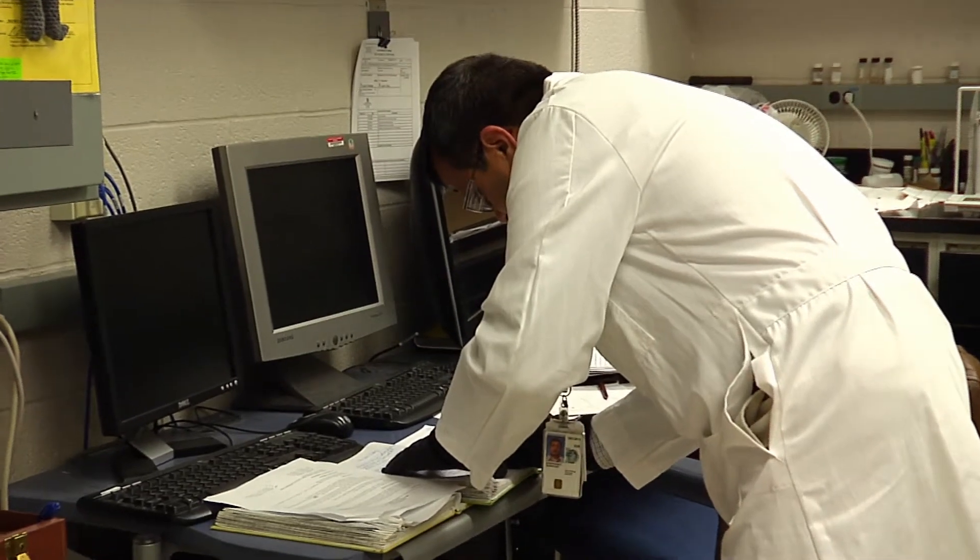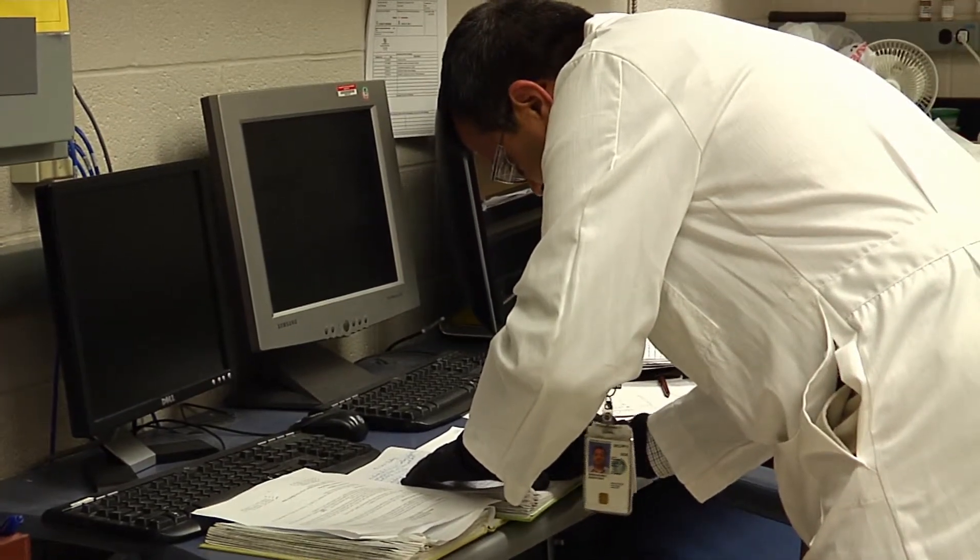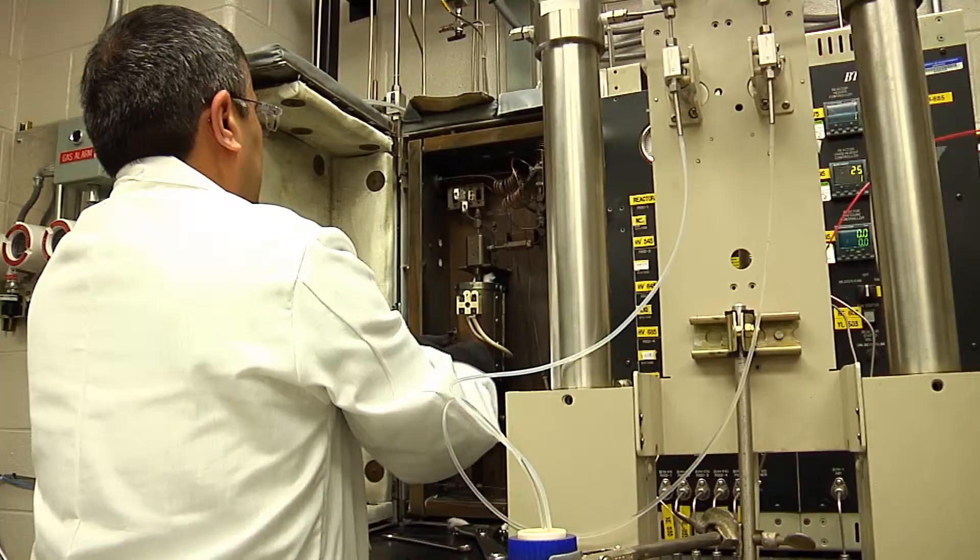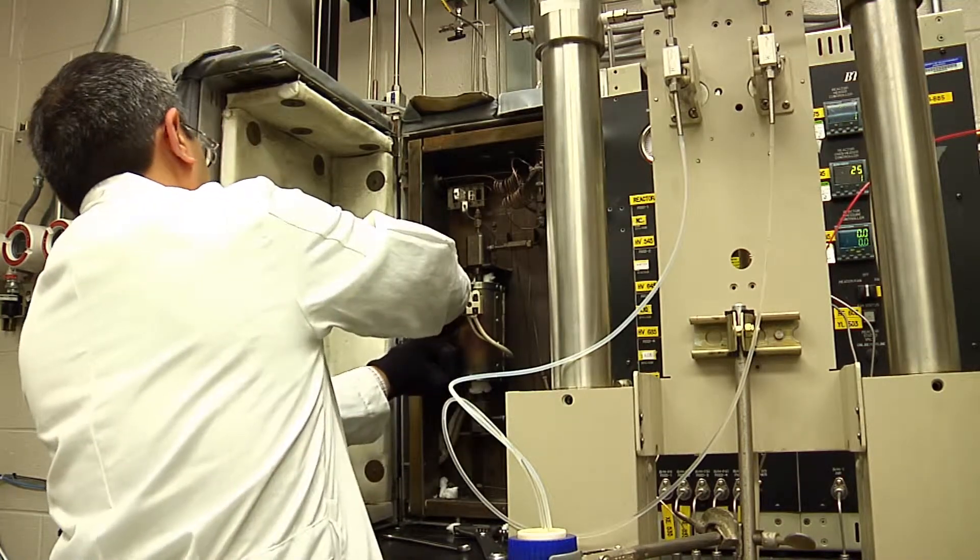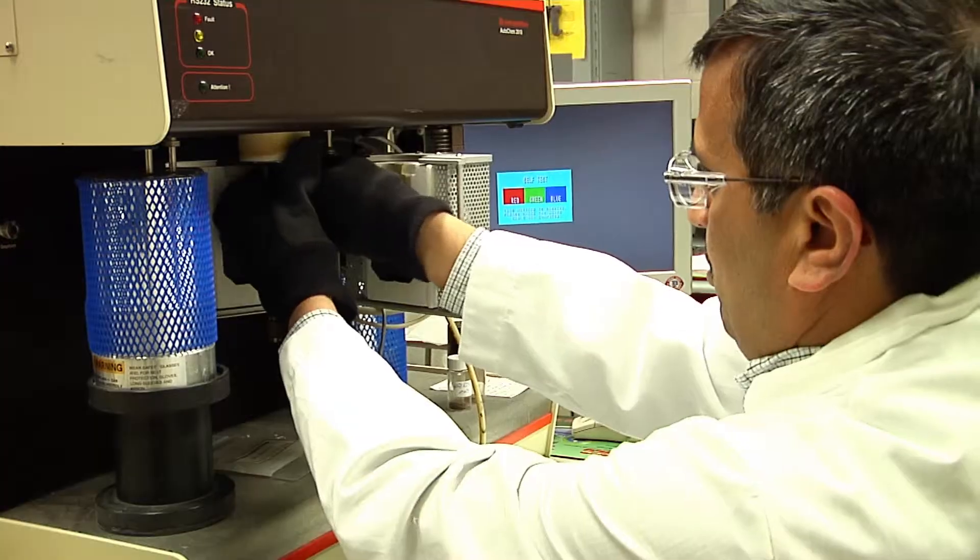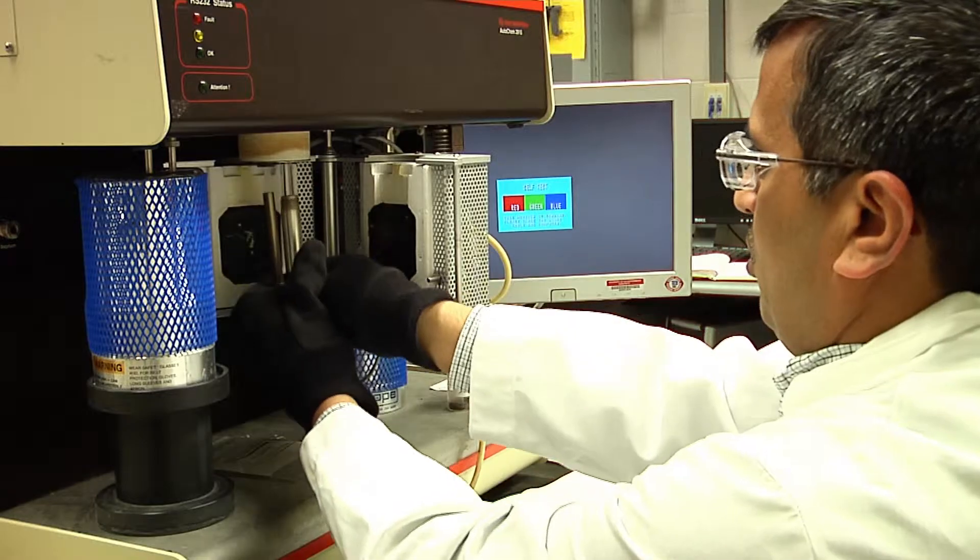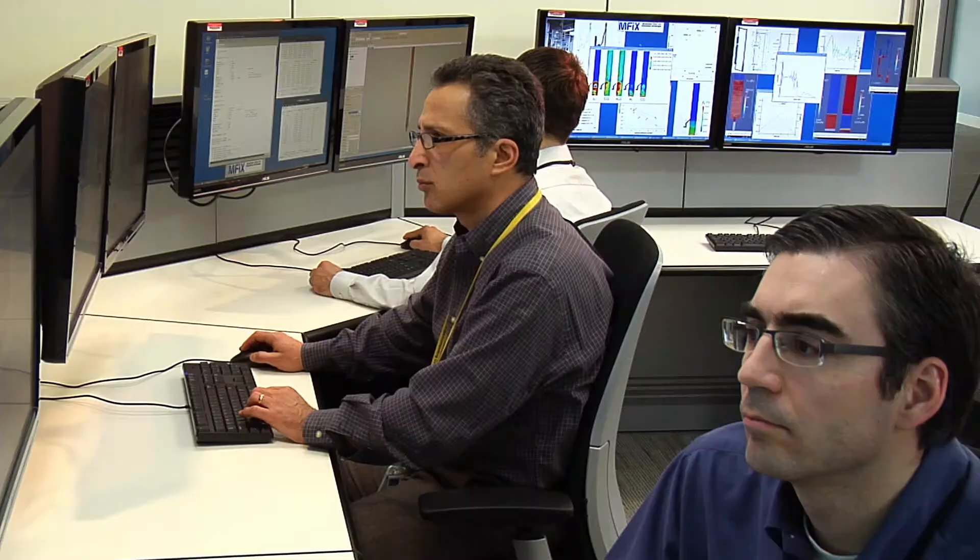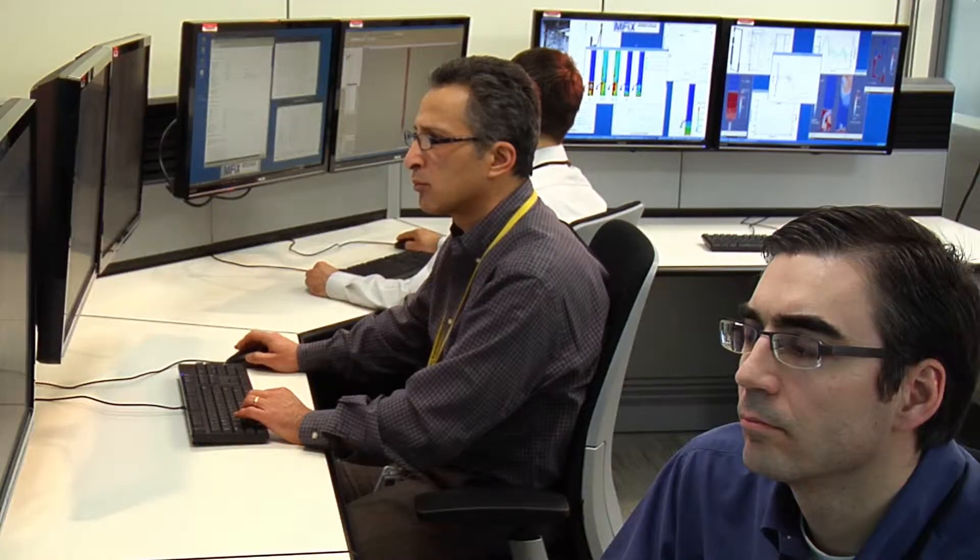NETL's fuel reforming facilities comprise four bench-scale reactor systems, one Fischer-Tropsch reactor, two reforming test rigs, and two micrometrics catalyst characterization units. All are coupled with state-of-the-art analytical capabilities.